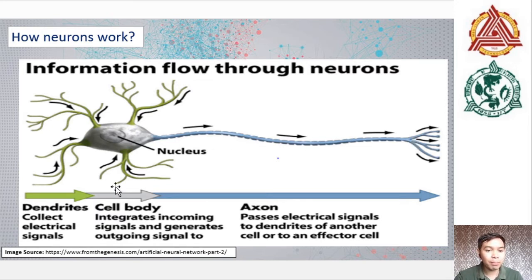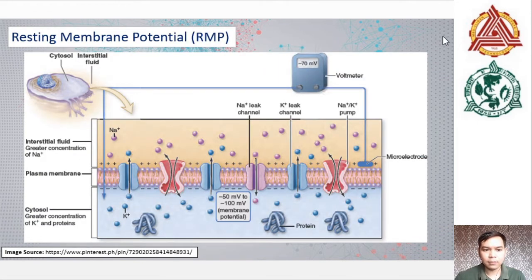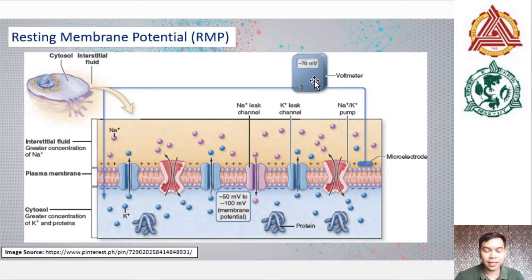This will only happen when the membrane of a neuron is electrically unstable, meaning the potential difference across the neuronal cell membrane can transiently change. Before the action potential is generated, it is necessary to look at the electrical activity of the neuronal cell membrane at rest, called the resting membrane potential. This figure illustrates the resting membrane potential or RMP. In most neurons, the resting membrane potential has a value of approximately negative 70 millivolts or negative 75 millivolts.